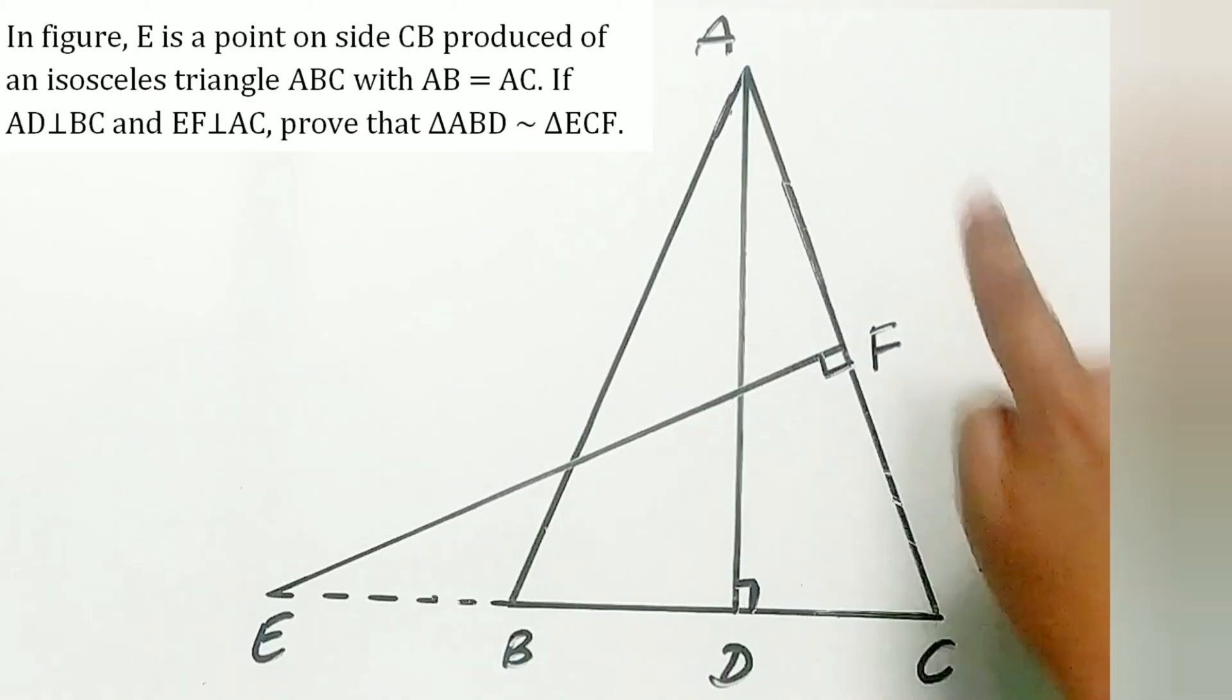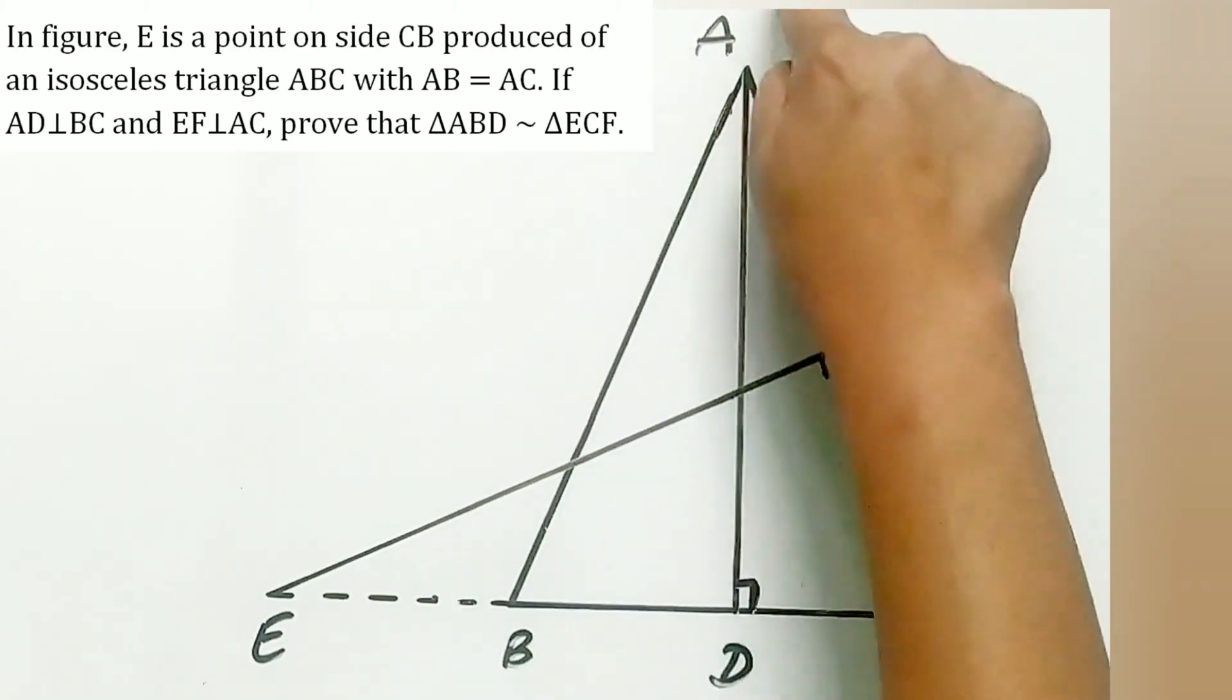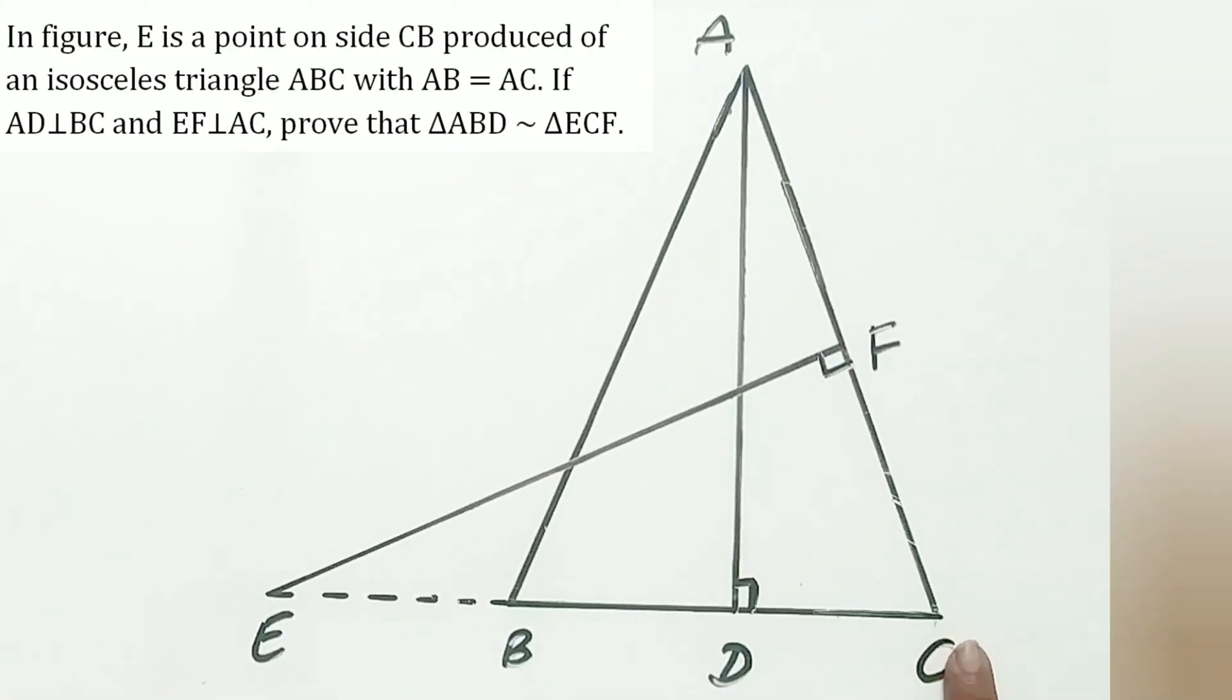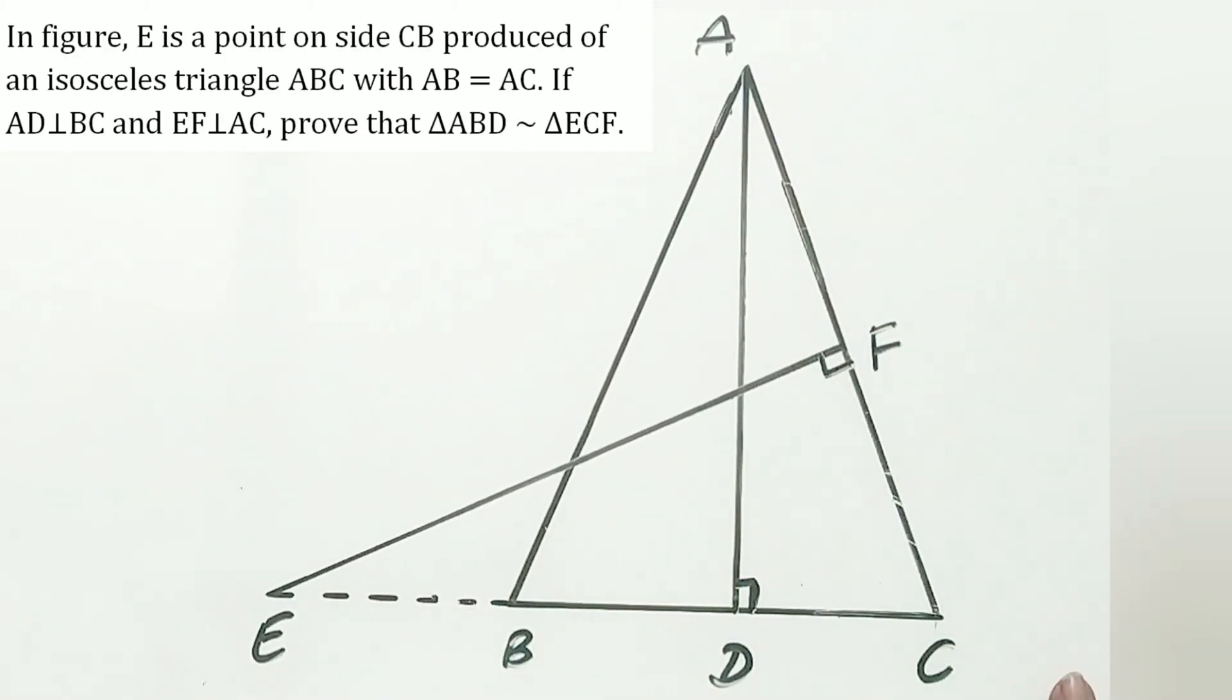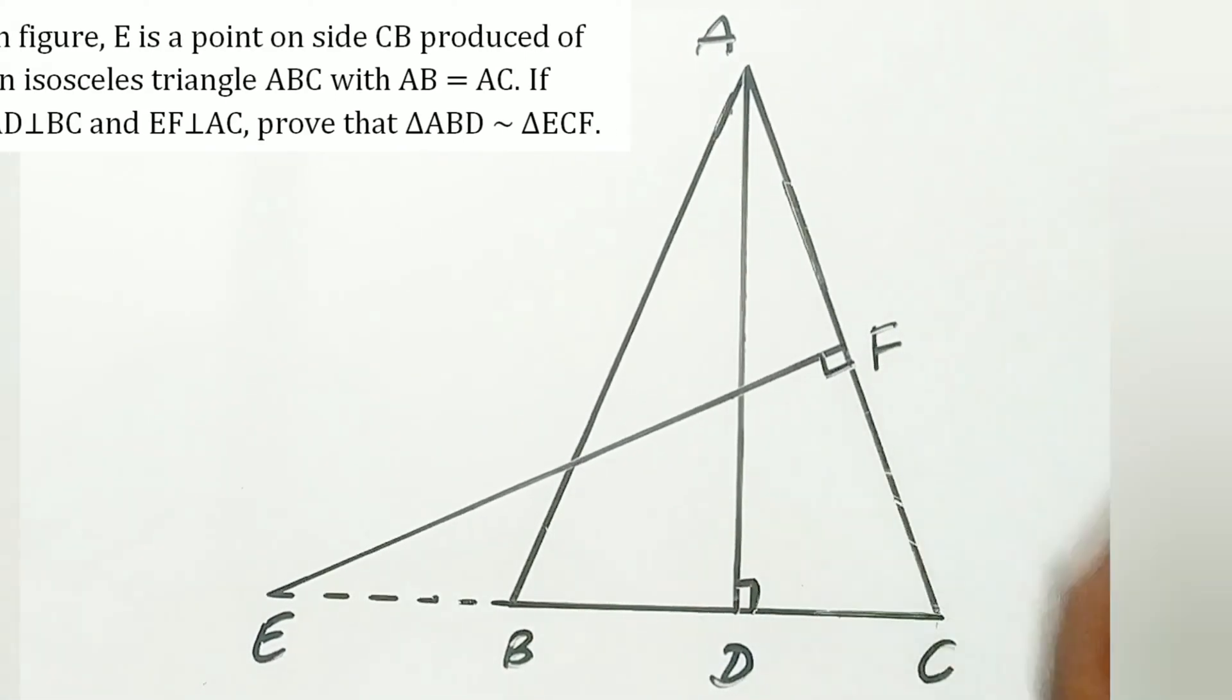triangle ABC with AB equal to AC. If AD is perpendicular to BC and EF is perpendicular to AC, prove that triangle ABD is similar to triangle ECF.